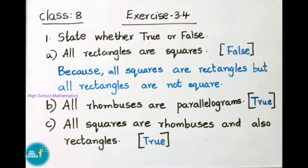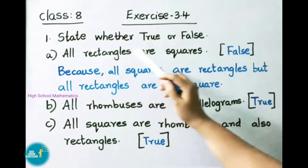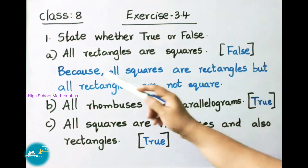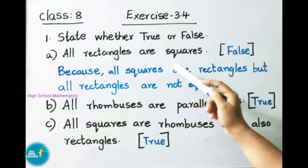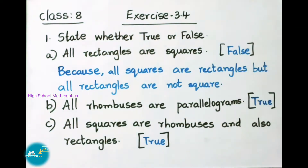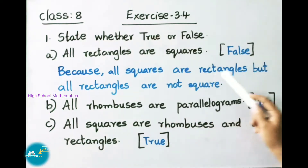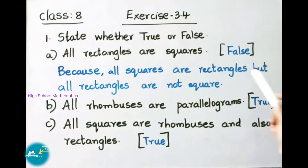See now question number 1: State whether true or false. Question A: All rectangles are squares. No, it is false. Why? Because all squares are rectangles but all rectangles are not squares.